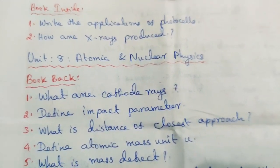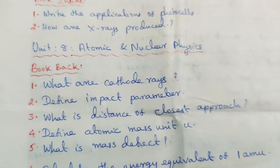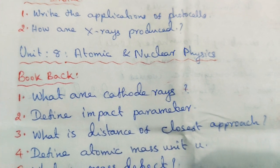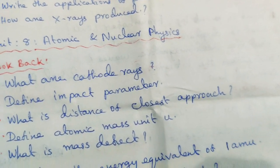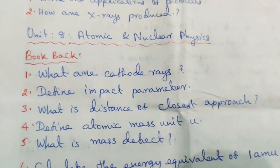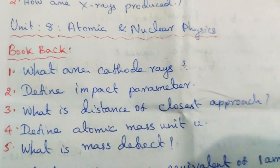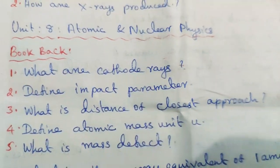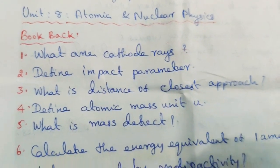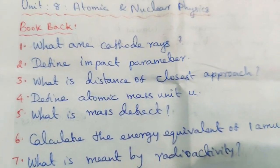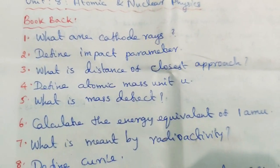Unit 8: Atomic and Nuclear Physics. Book back questions: What are cathode rays? Define impact parameter. What is the distance of closest approach? Define atomic mass unit. What is mass defect? Calculate the energy equivalent of 1 amu.